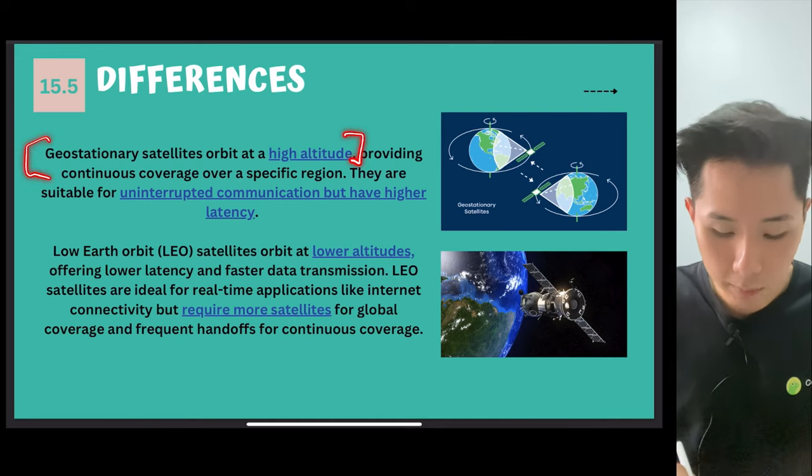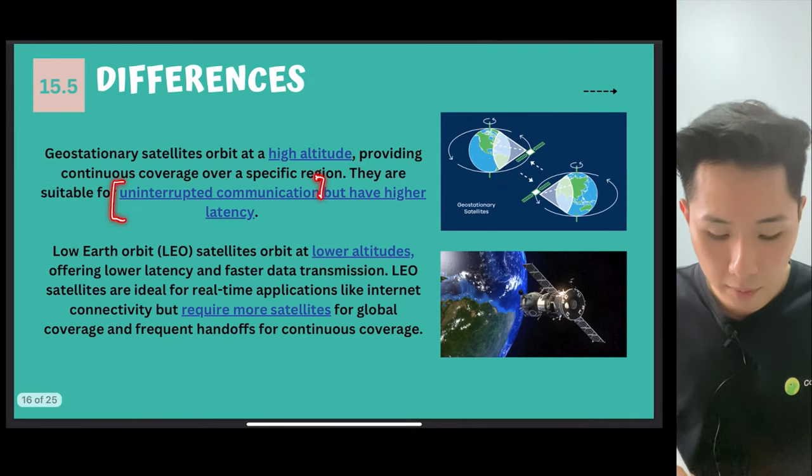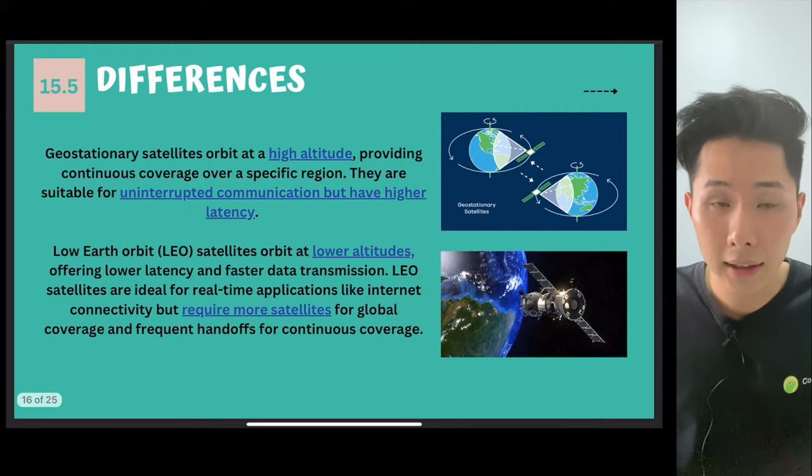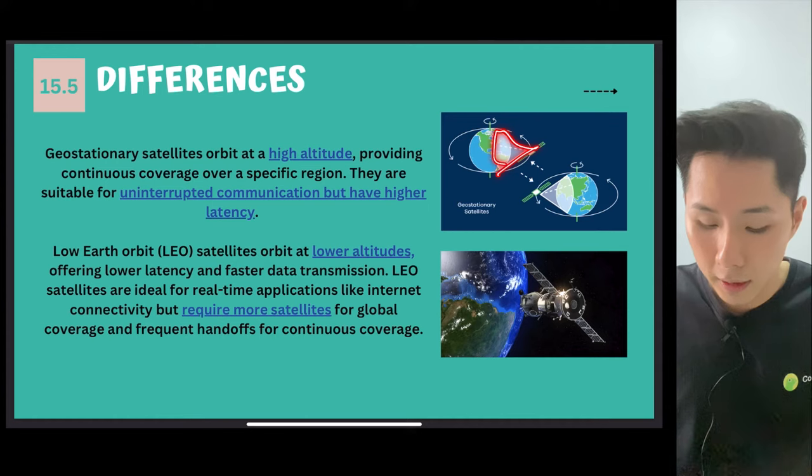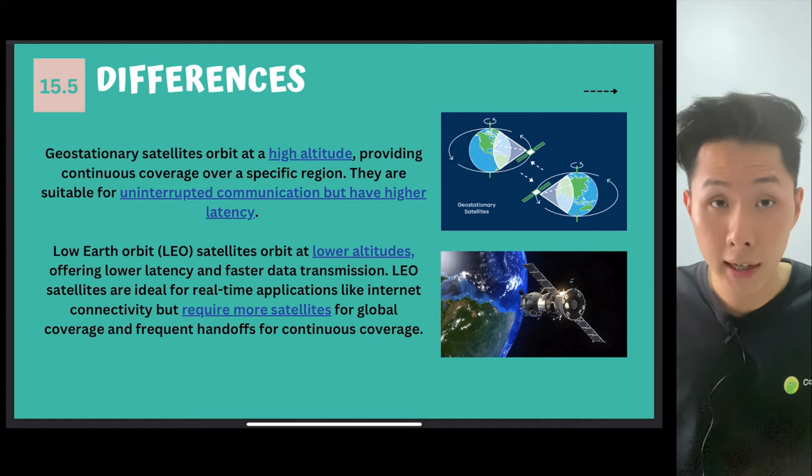Geostationary satellites orbit at high altitude, meaning they can cover a huge area on earth. And they are suitable for uninterrupted communication. But might have high latency, meaning it could be a delay. But the good thing is that we don't need many of them, because they can cover a large area.